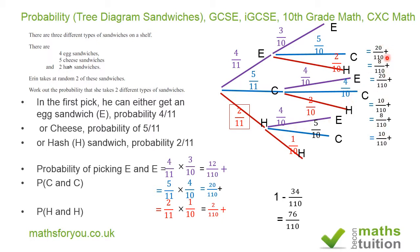If you add 20, 8, 20, 10, 8, and 10, you get 76 over 110 — the same answer as with the complement method. So we have two methods here, and the first one — the complement method — is the easiest. It's entirely up to you which method you use.